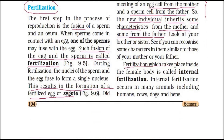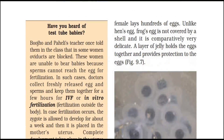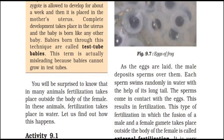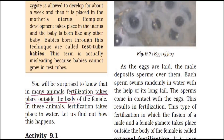Fertilization which takes place inside the female body is called internal fertilization. It happens in animals like humans, cows, dogs, and hens. Humans are also considered part of the animal kingdom. In some animals, fertilization takes place outside the body of the female — in water — and we call this external fertilization.